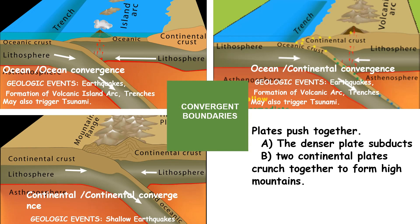In Convergent Boundaries, plates push together. There are two main concepts to keep in mind: the denser plate subducts or goes underneath, and when two continental plates crunch together they form high mountains.